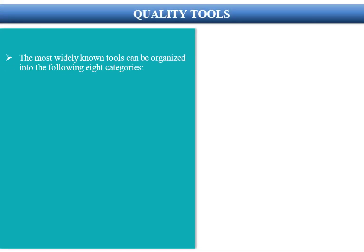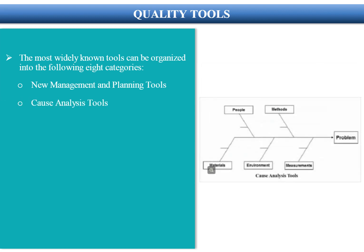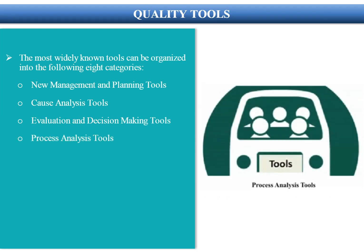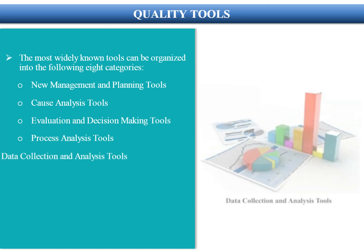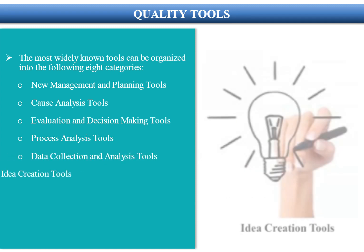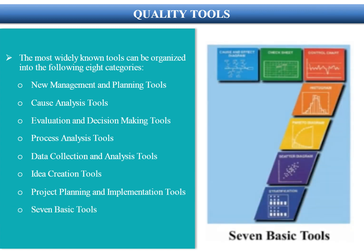Quality tools can be organized into the following eight categories: new management and planning tools, cause analysis tools, evaluation and decision making tools, process analysis tools, data collection and analysis tools, idea creation tools, project planning and implementation tools, and the 7 basic tools.